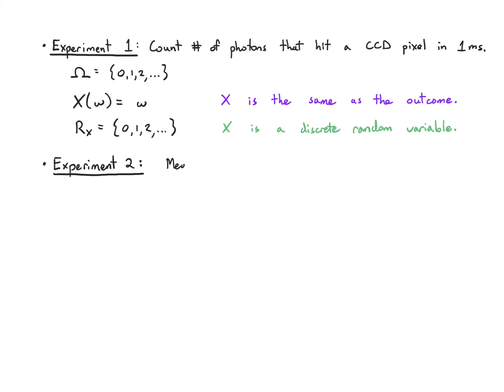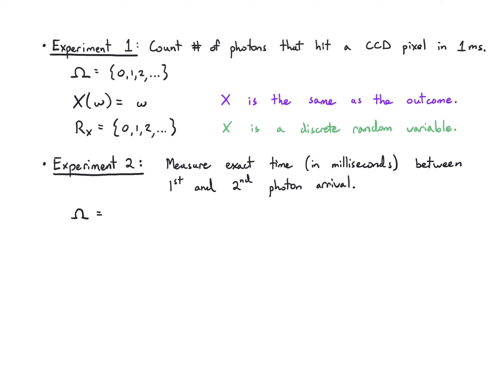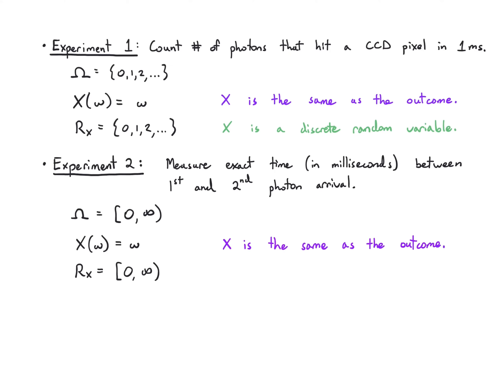Experiment two: I'm measuring the exact time between the arrival of the first and second photons — getting it down to the very last decimal place, so I'm really thinking about non-negative real numbers. I again take the random variable to just be this outcome, and the range is the same. But X is not a discrete random variable, because I have an uncountable set. So it's not discrete.